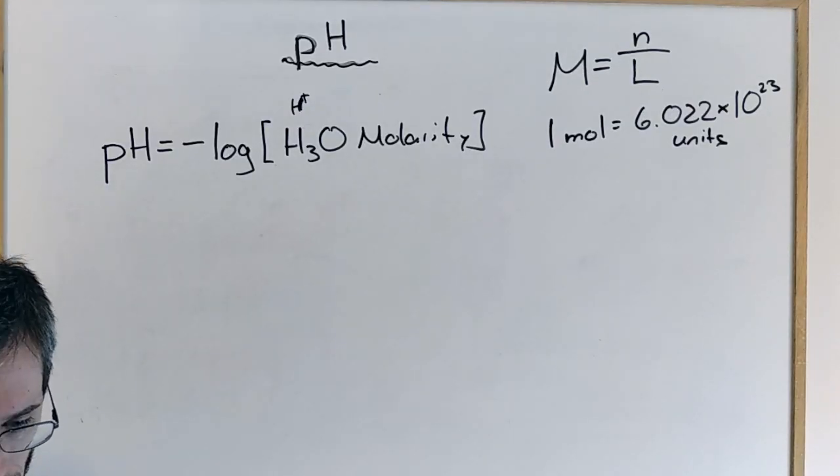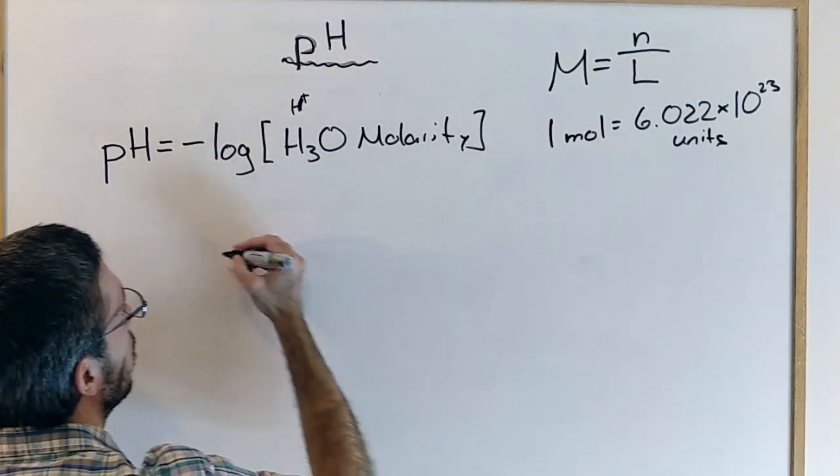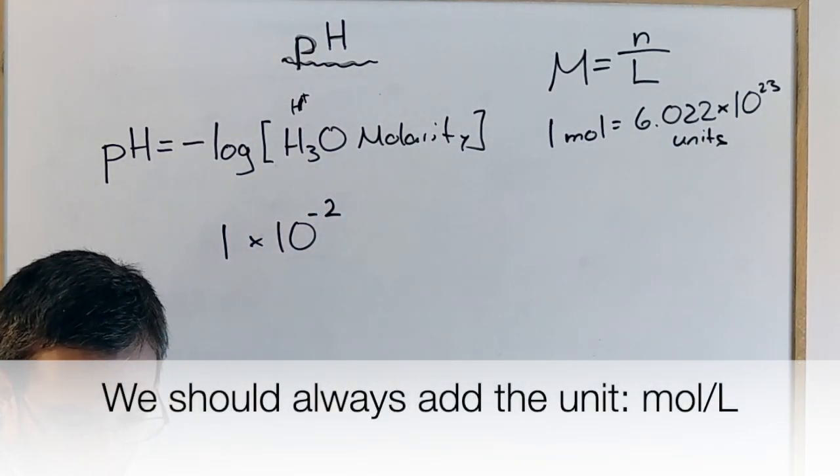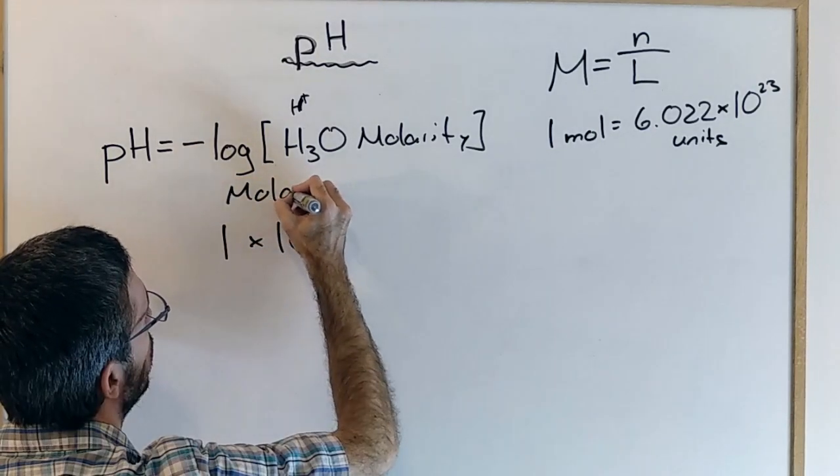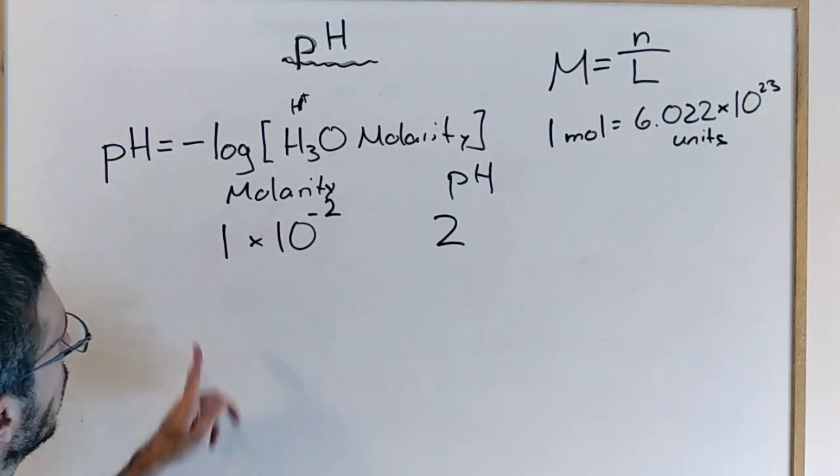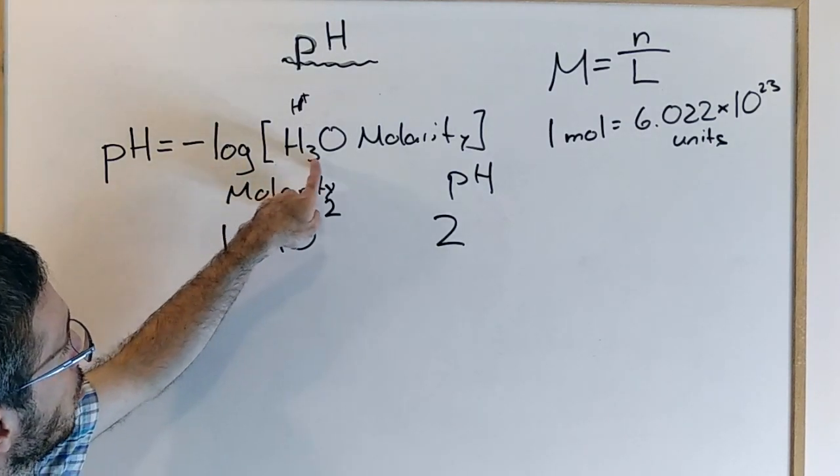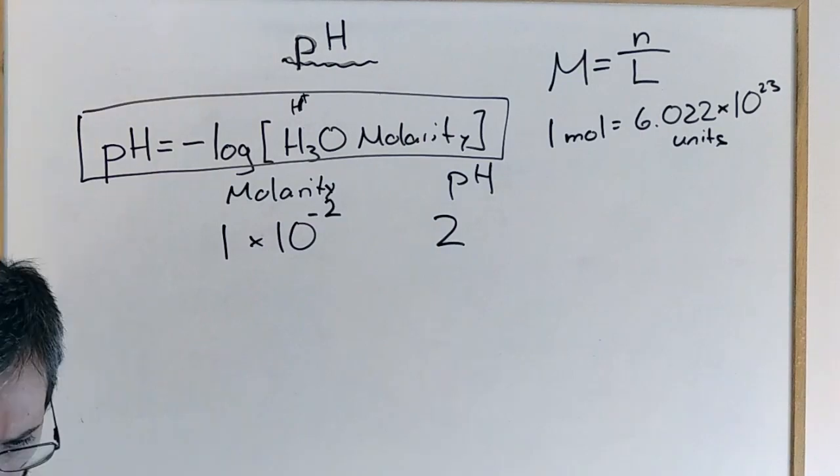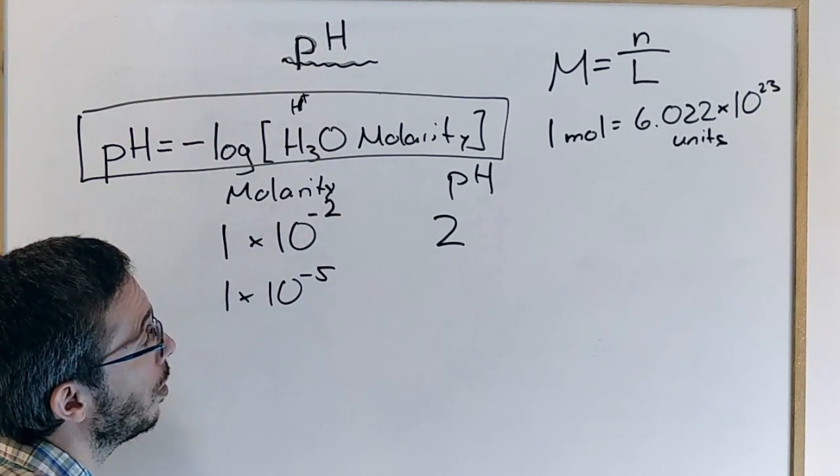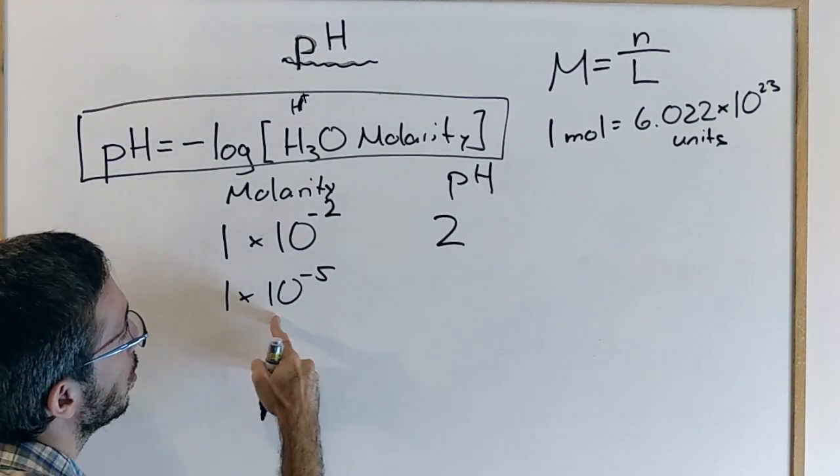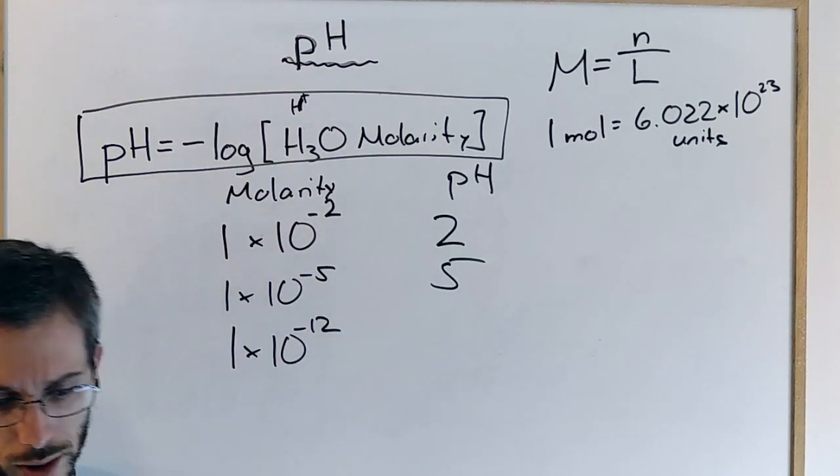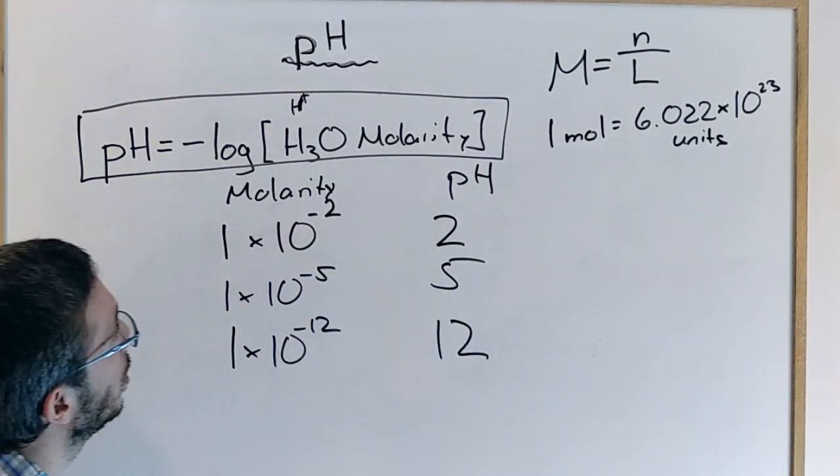For example, if I had a concentration of 1 times 10 to the minus 2, that would give me a pH of 2. You can type this in the calculator, minus log of H3O plus molarity, you get 2. If I have 1 times 10 to the minus 5 mols of hydronium in my solution, then the 5 will become a pH. And if I have 1 times 10 to the minus 12, then I will get a pH of 12.